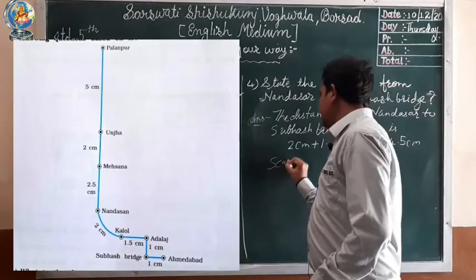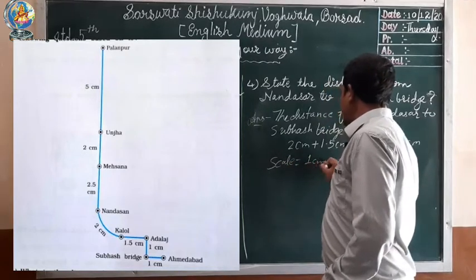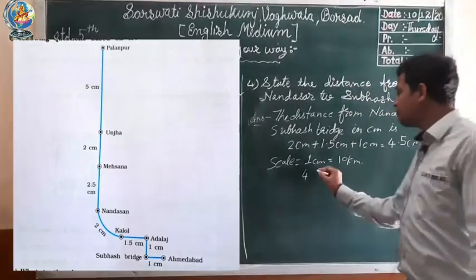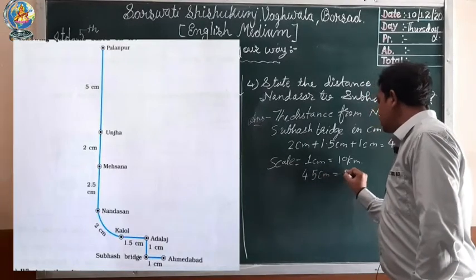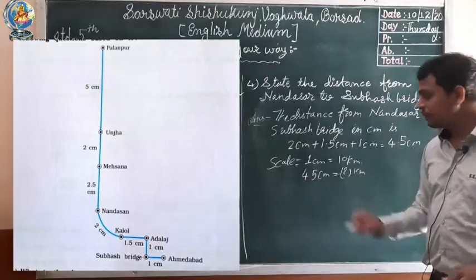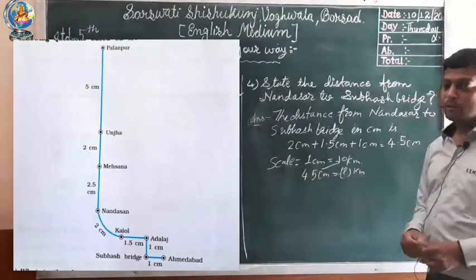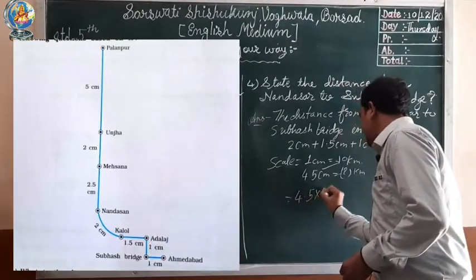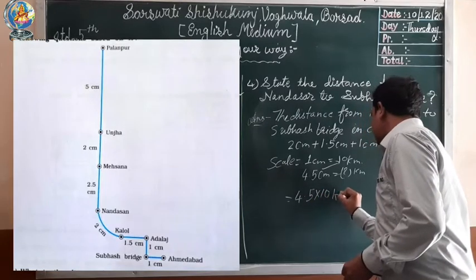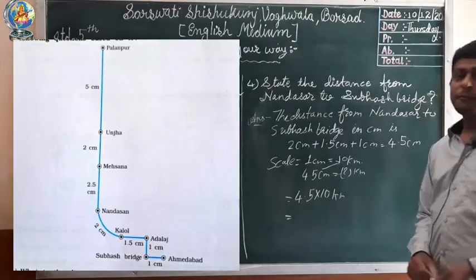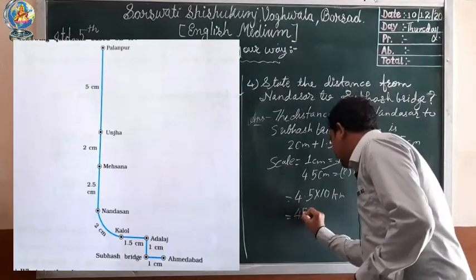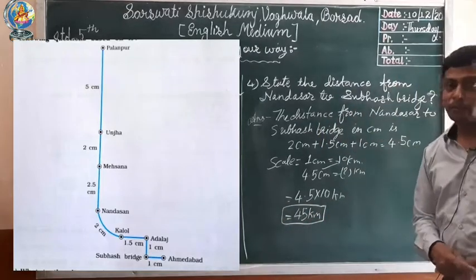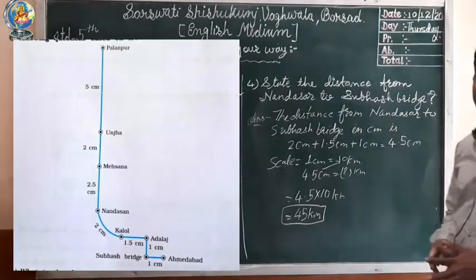We know the scale: 1 centimeter equals 10 kilometers. For 4.5 centimeters: 4.5 multiplied by 10 equals 45 kilometers. The distance from Nandasar to Subhash Bridge is 45 kilometers.